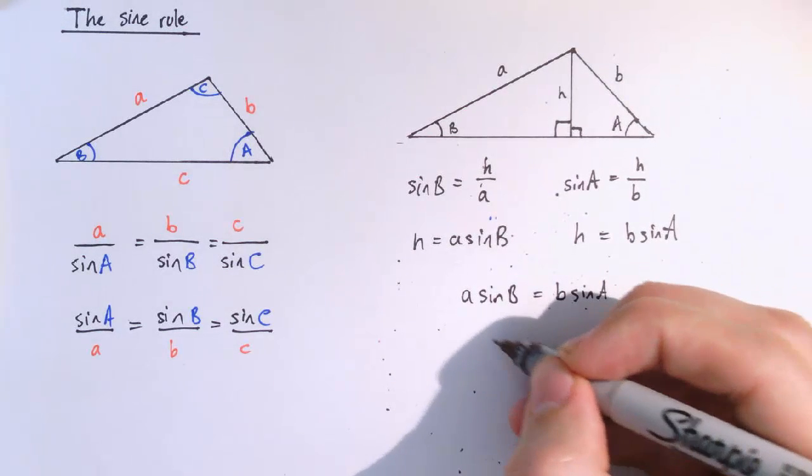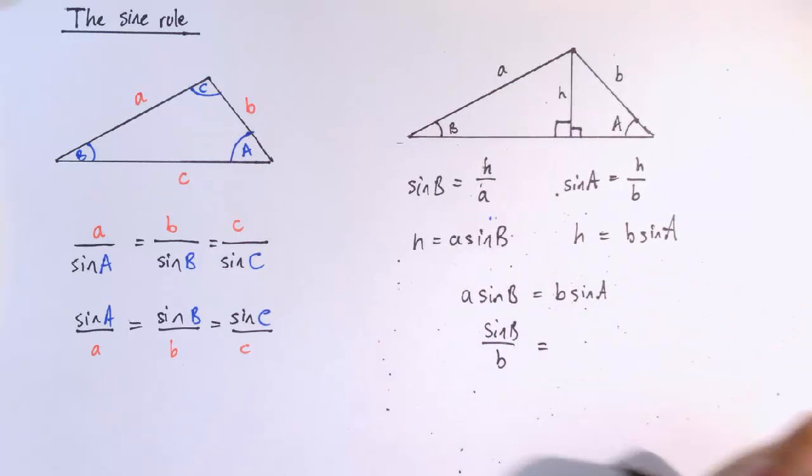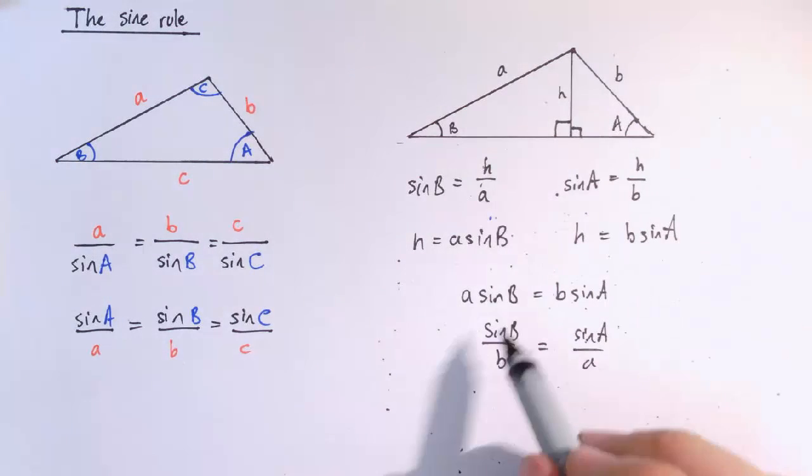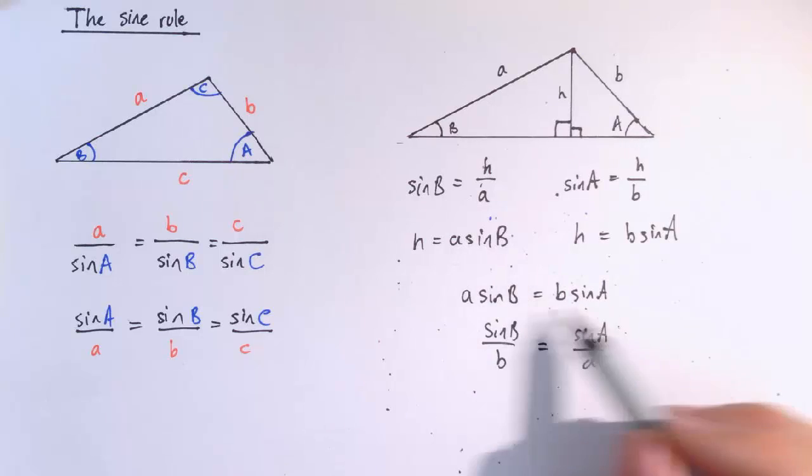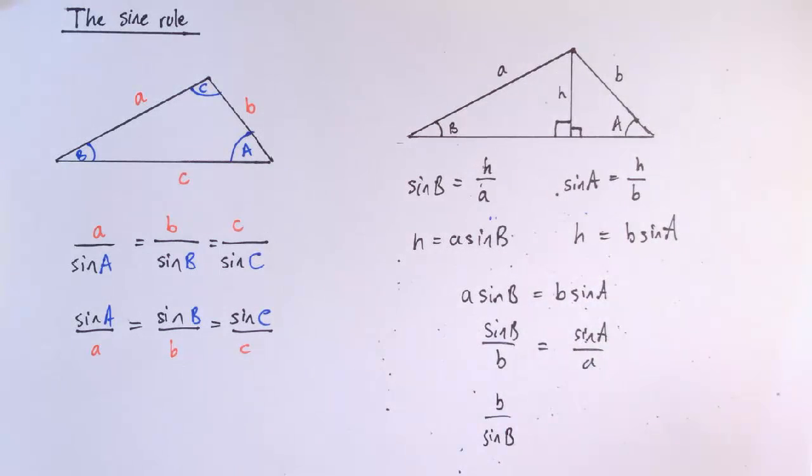And so that means we've got sine b divided by b equals sine a divided by a. Or you could have done that the other way around. I could have divided by the sine instead of the a and the b. And that would have given us b over sine b equals a over sine a.